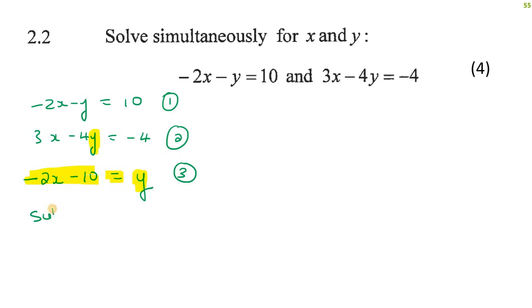So we are going to substitute. That's why it's called the substitution method. We're going to substitute equation number three inside equation number two. So we're going to end up with 3x minus 4 brackets minus 2x minus 10 equals minus 4. So you see what I did? I just took this expression and I replaced it with that y over there.